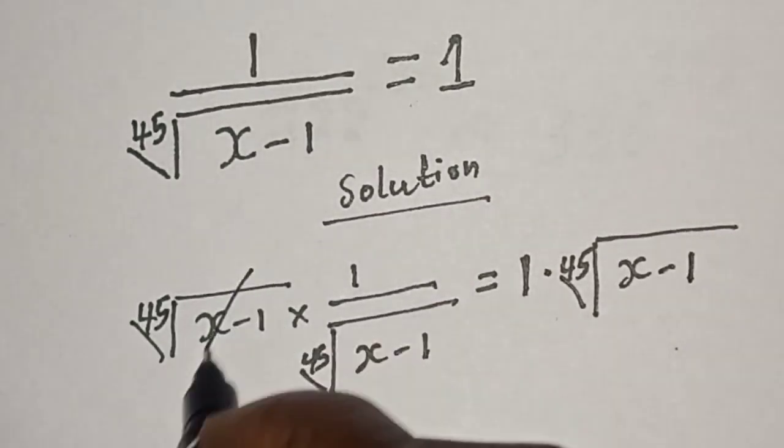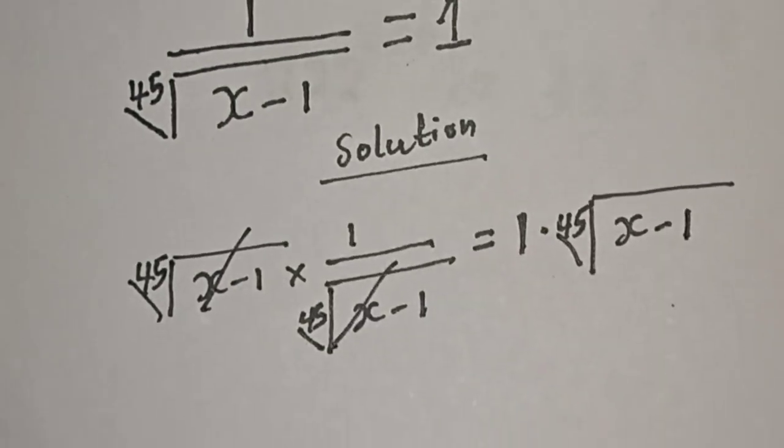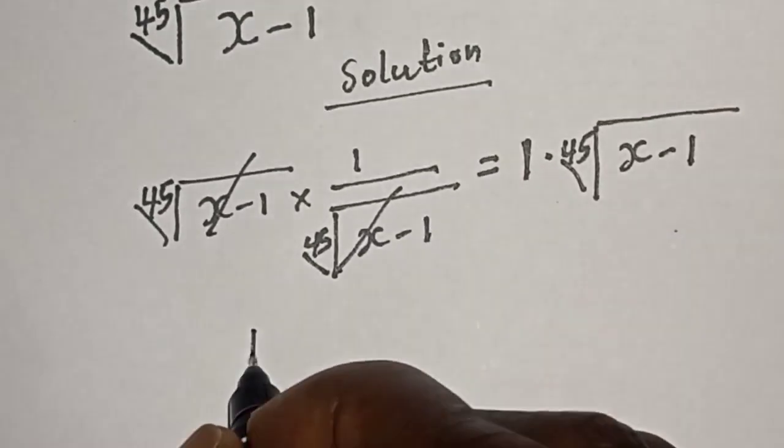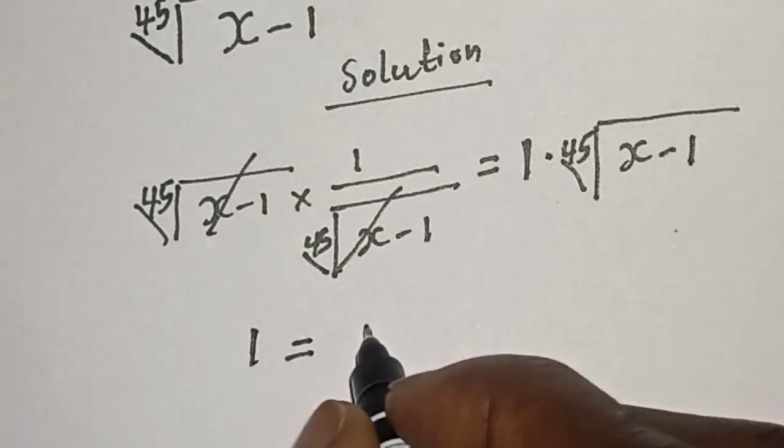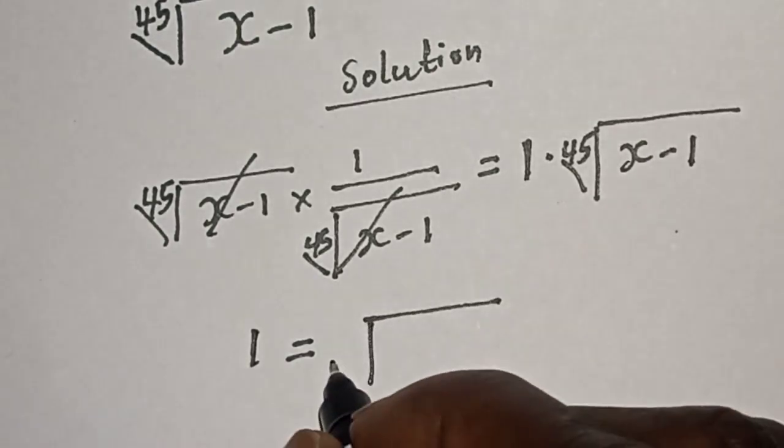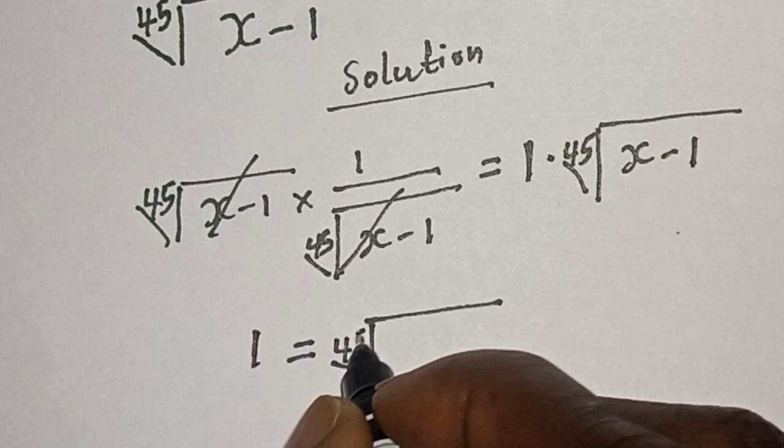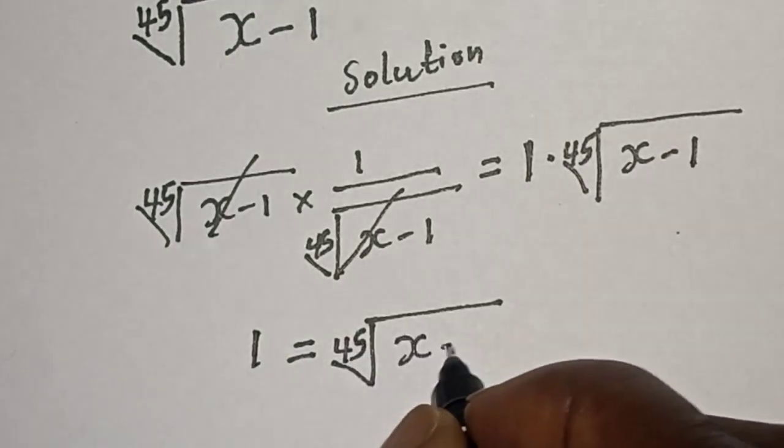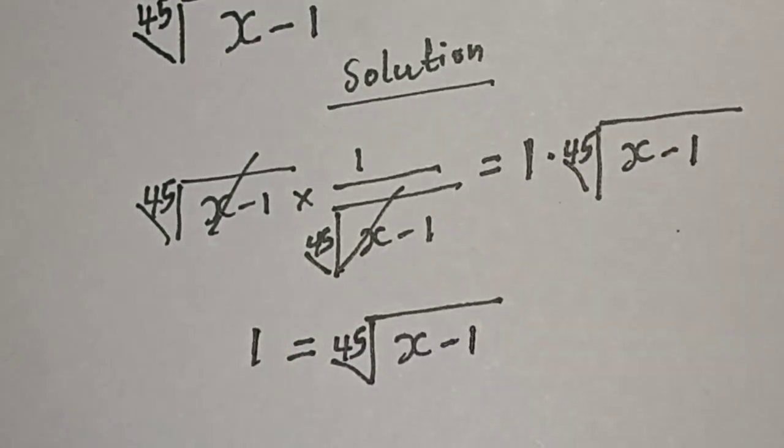So this one will cancel this. We have 1 is equal to 45 root of x minus 1. But we are looking for the value of s.